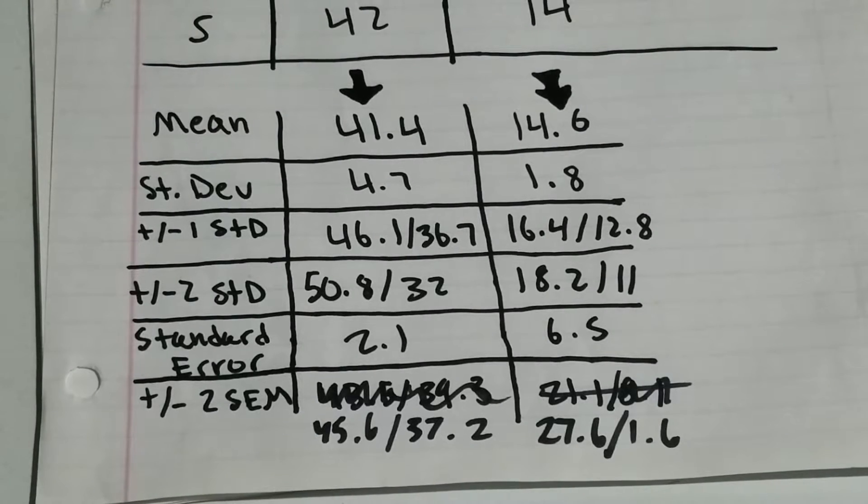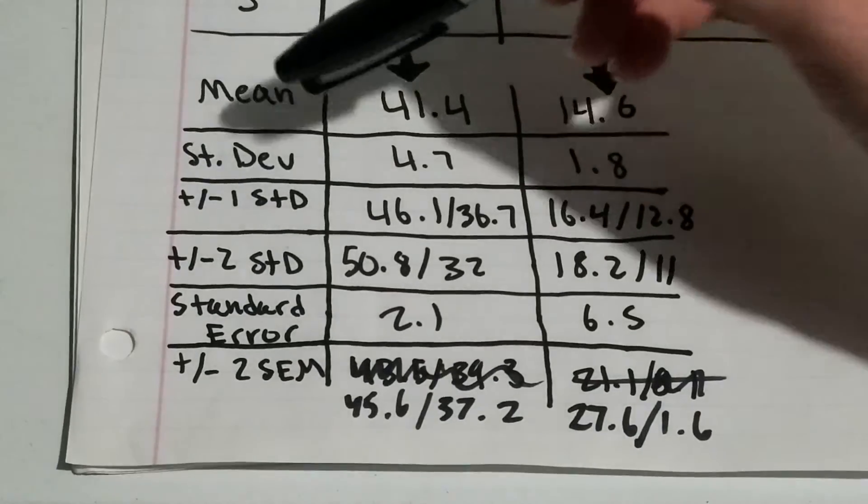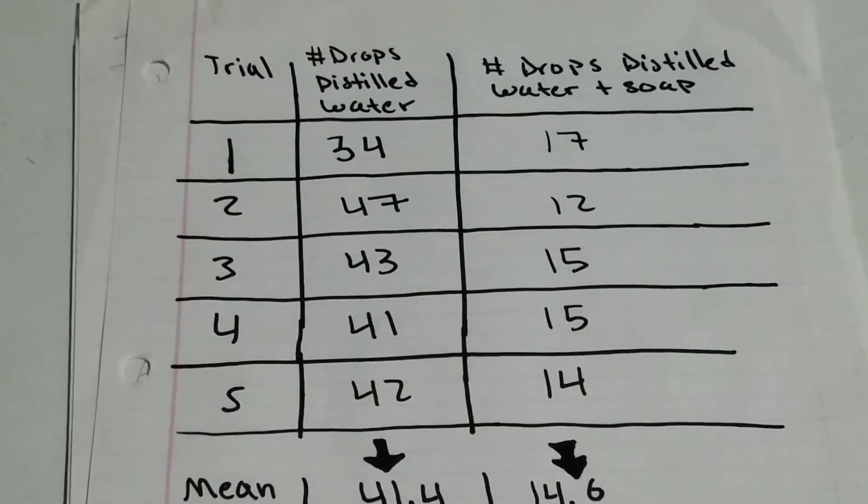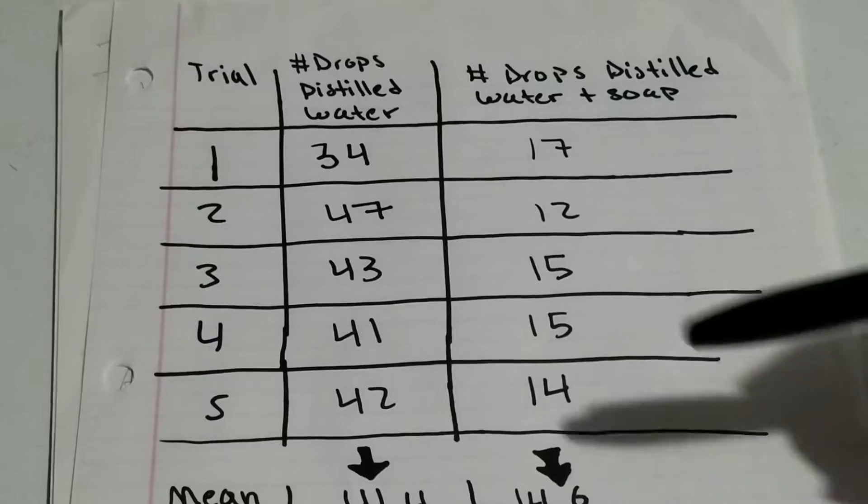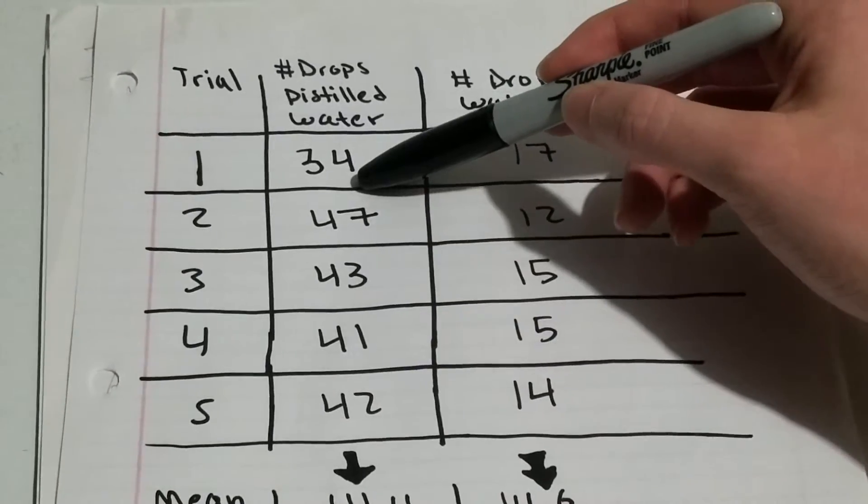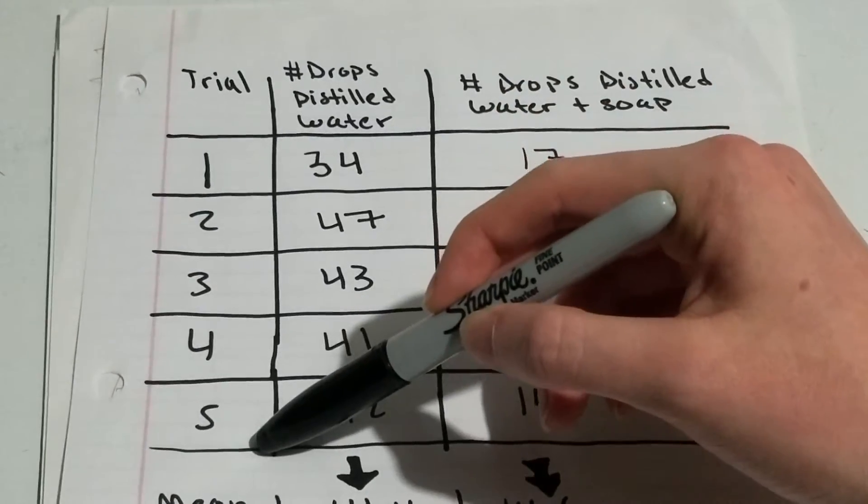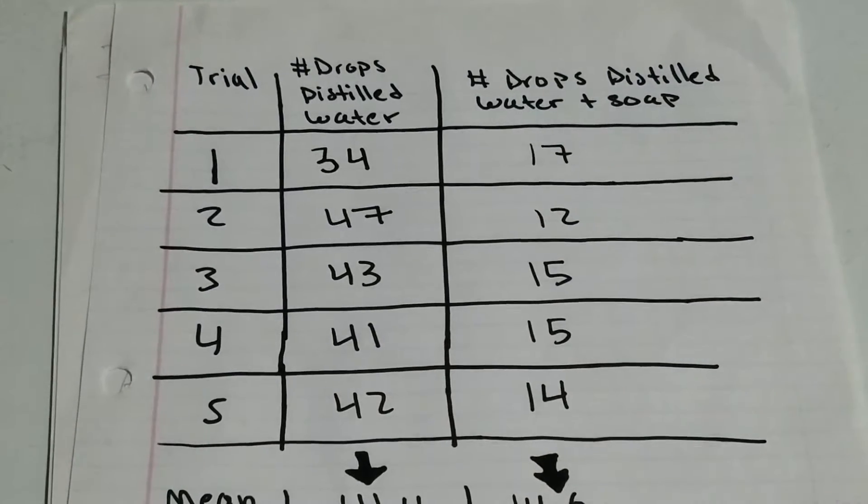So once you have your data, you need to do some data analysis. To find the mean, what you're going to want to do is add up all your data points here and divide it by 5, since that's the number of trials that we have.